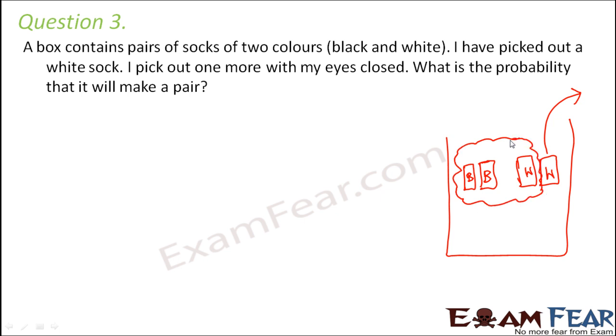So basically now inside the box we have these three left. We have one white and two black left, and let's say that you pick out one of these by closing your eyes. So what is the probability that it will make a pair? Basically we have to find out what is the probability that the one which we pick up is a white one. Only then it will make a pair with the already picked white sock, right?